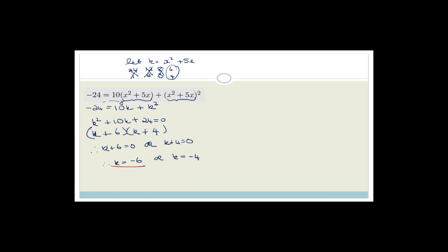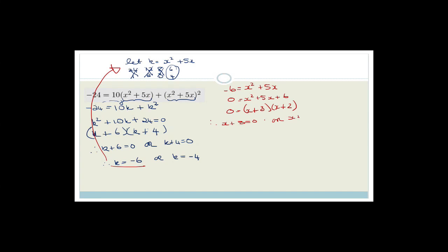We need to substitute back. For k equals negative 6: negative 6 equals x squared plus 5x, giving x squared plus 5x plus 6 equals 0. Factorizing: coefficient of x squared is 1, so it's x and x, both signs plus. Factors of 6 that add to 5 are 3 and 2. Therefore x plus 3 equals 0 or x plus 2 equals 0, giving x equals negative 3 or x equals negative 2.